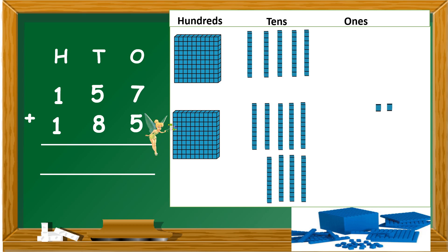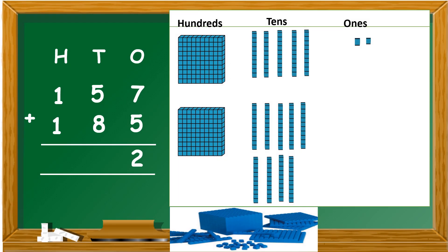So, we add a ten to the tens column. And how many ones do we have remaining? We have 2 ones remaining. So, we are going to put the 2 in the ones column. Here we see we have our 2 ones and we have our tens and we have our hundreds. Now, 8 add 5 is 13. But, remember, we added a ten to the tens column because we traded the 10 ones for 1 ten.